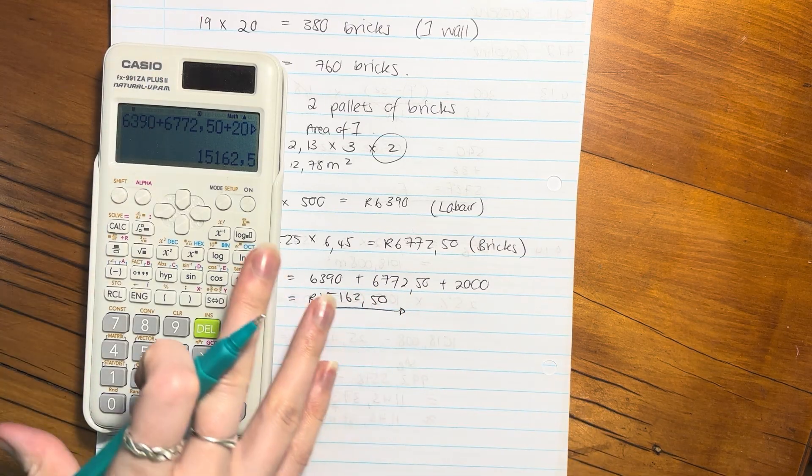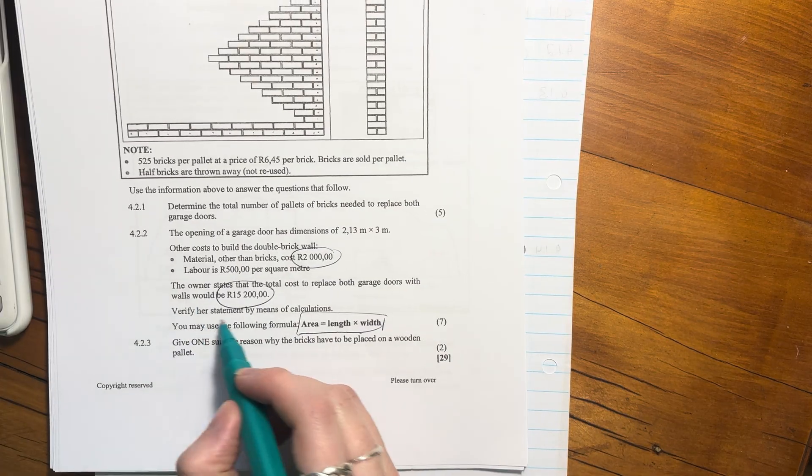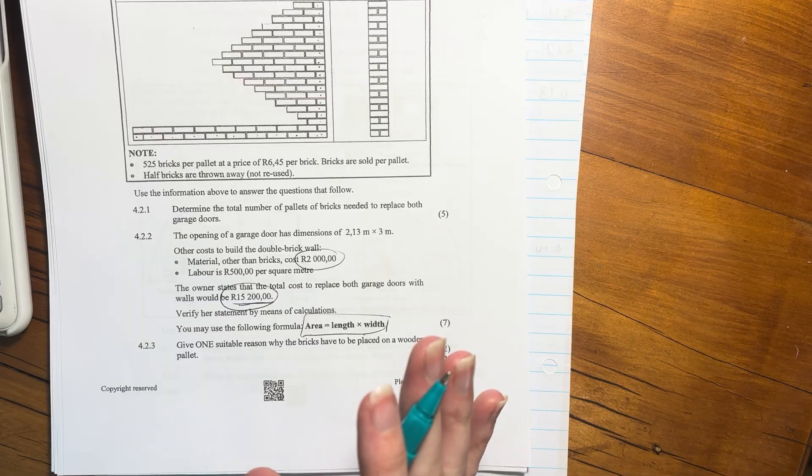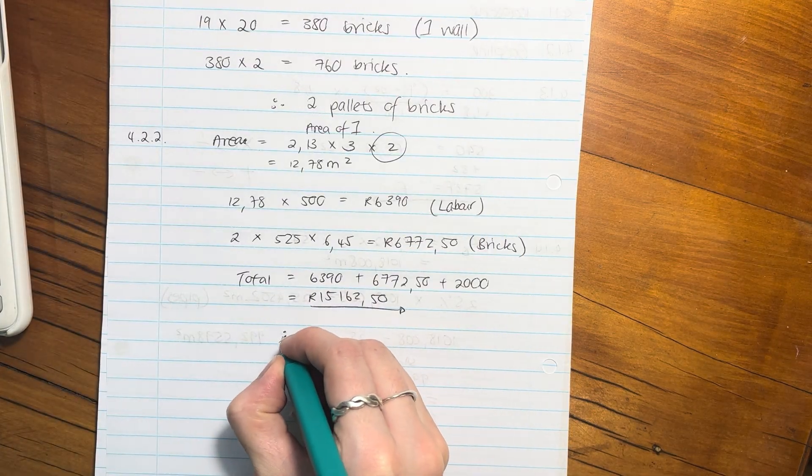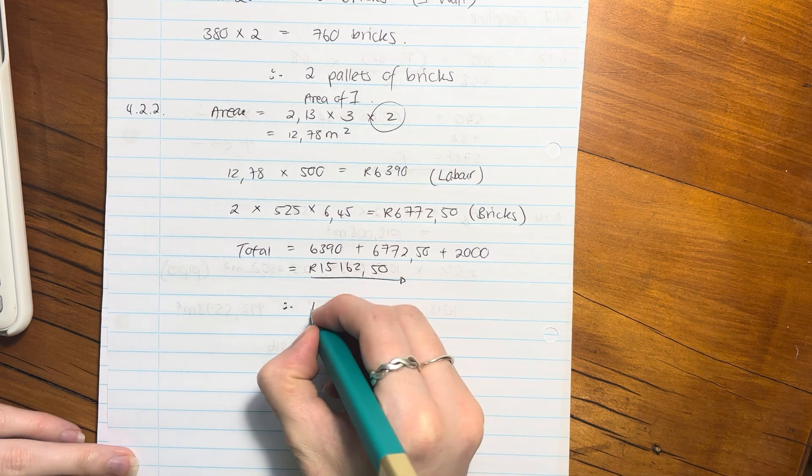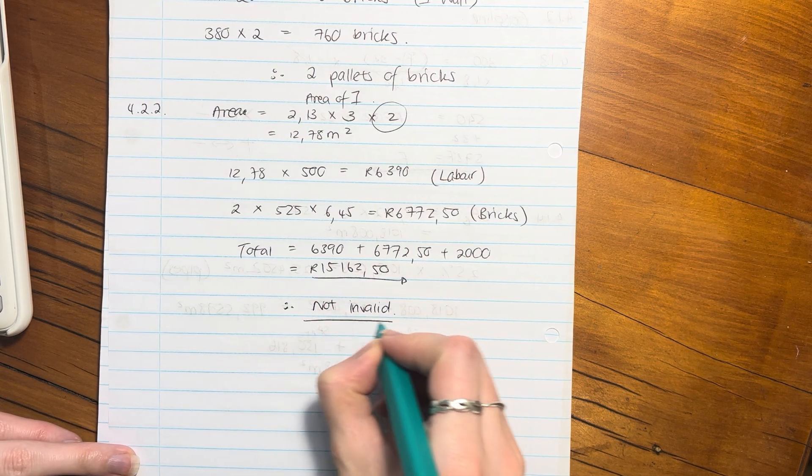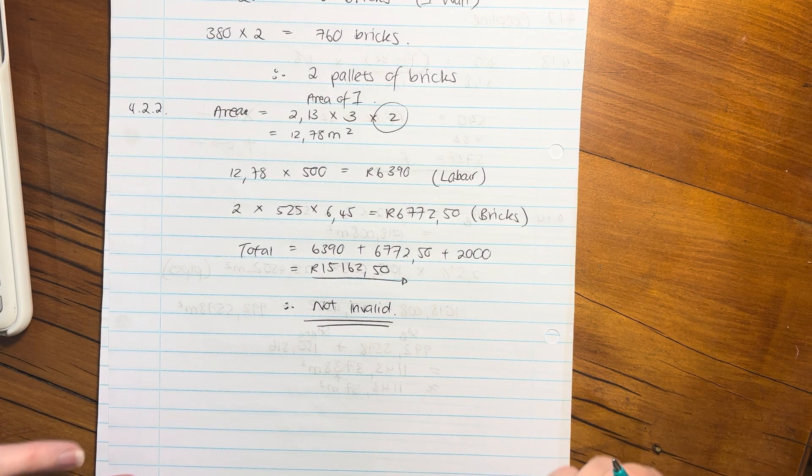We have to do the whole verifying situation, verify the statement. She's not too far off, but the statement is not fully correct. Therefore, we say therefore not valid or incorrect. A mark is allocated there, so that was a nice juicy question.